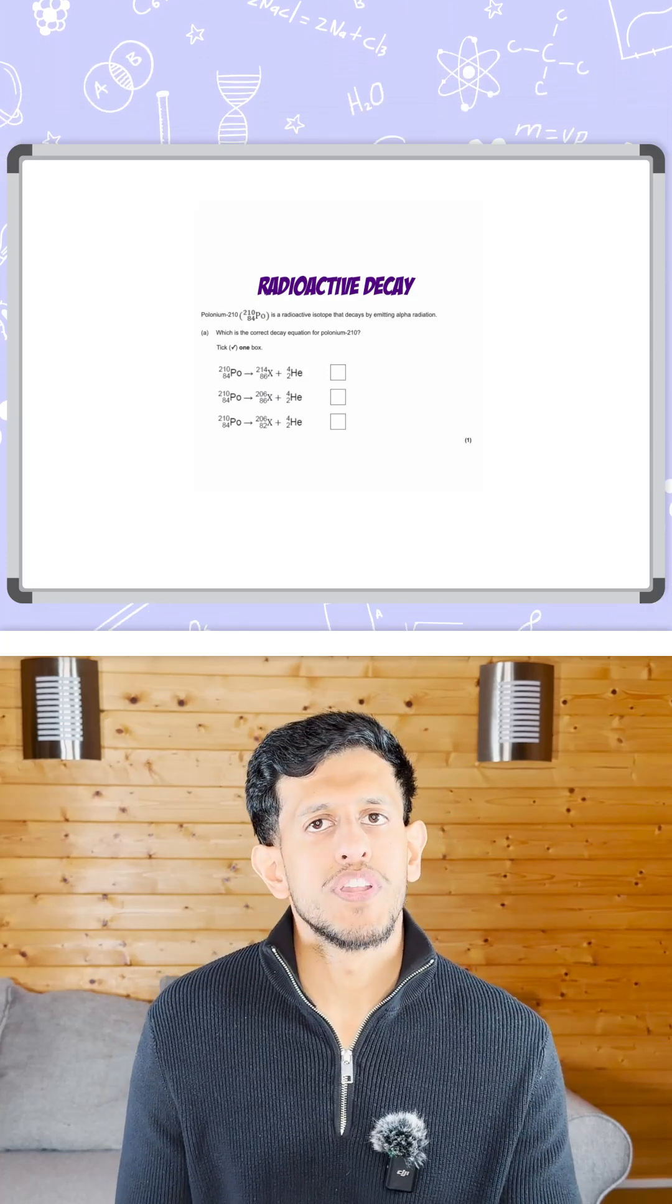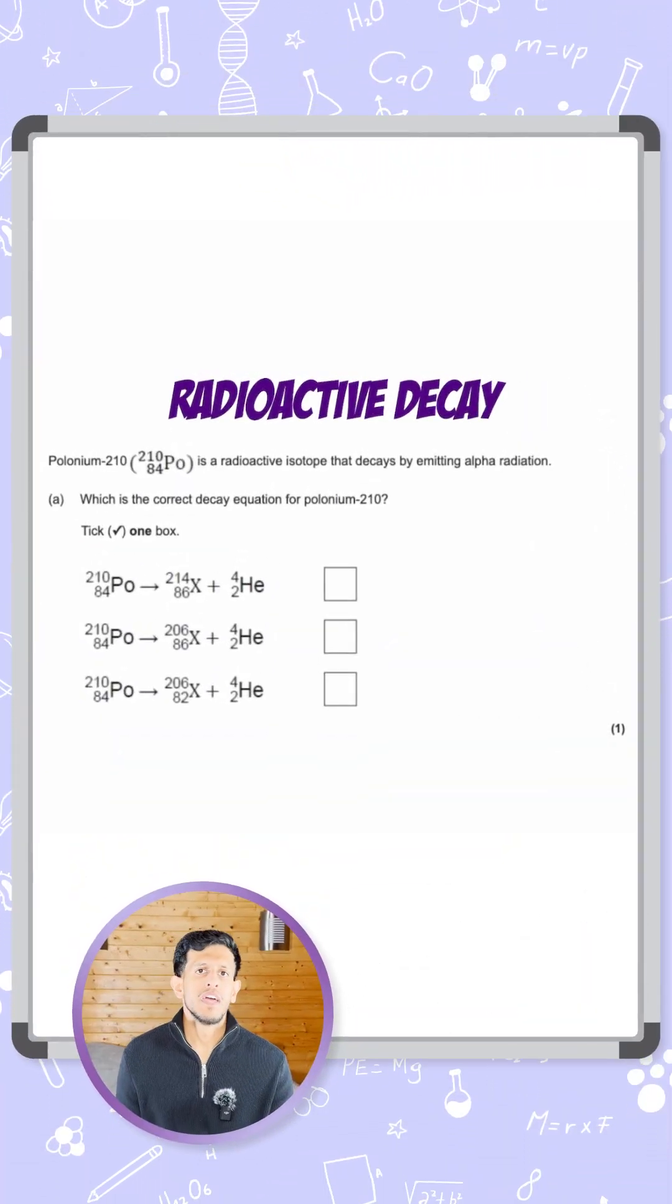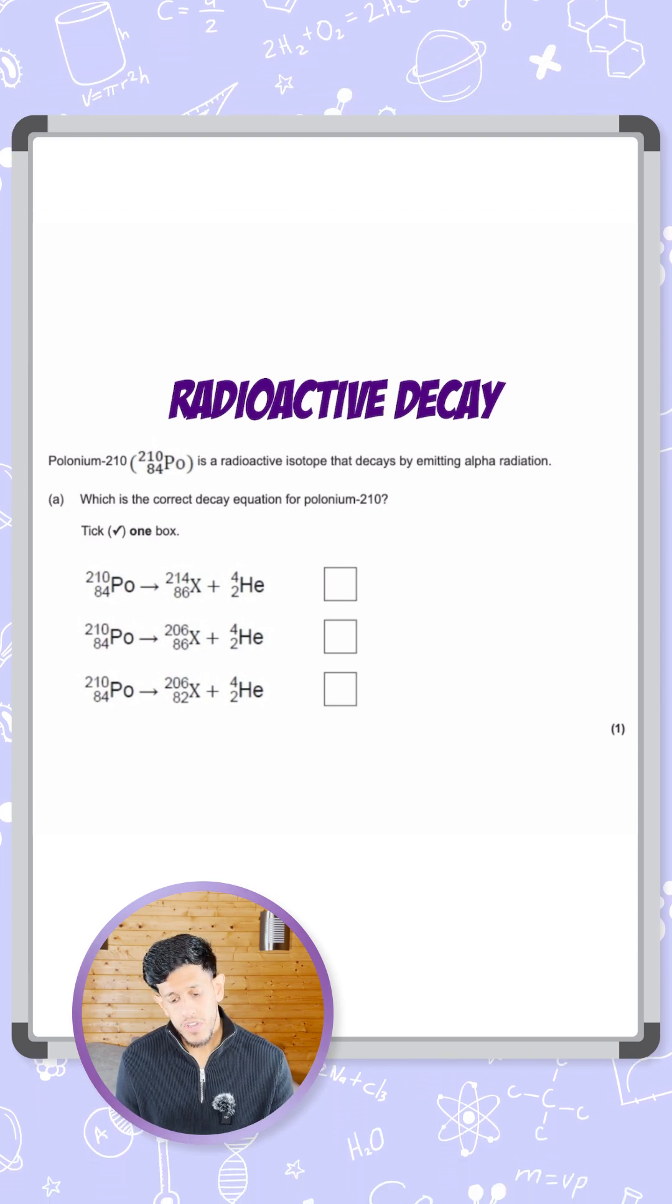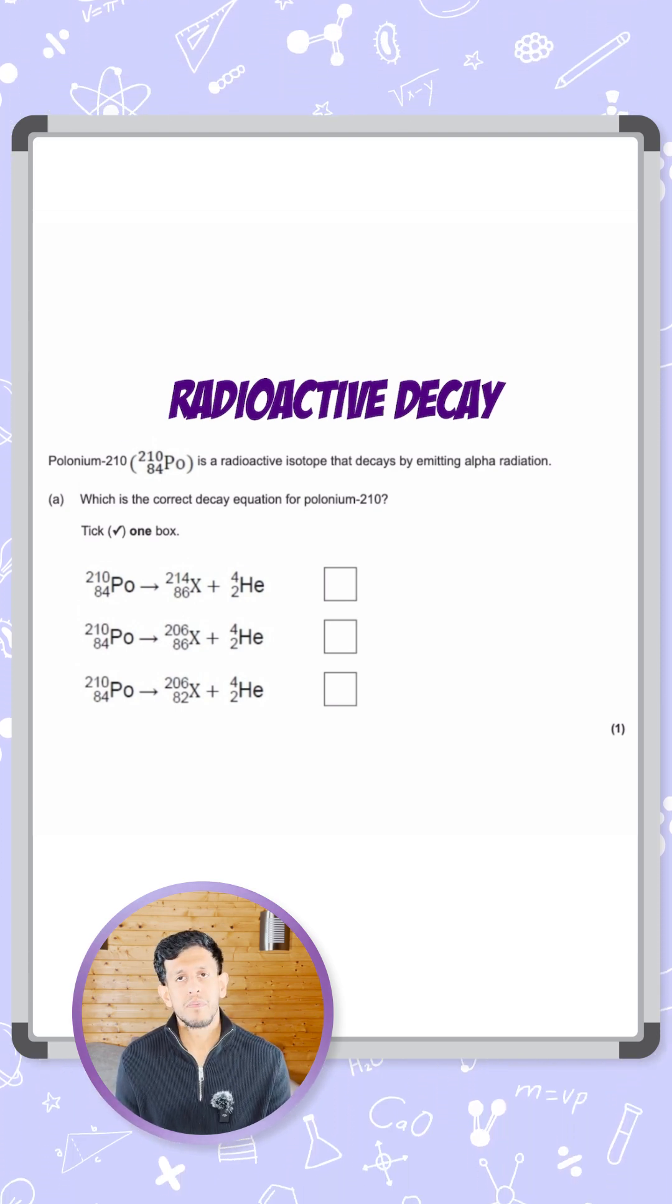Okay guys, so here we have a question on radioactive decay, in particular a decay equation. It's asking us for polonium-210, atomic number 84 and mass number 210.